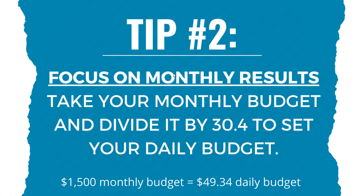Tip number two is to focus on your monthly results. You really want to set a monthly budget ahead of time and then divide that monthly budget by 30.4 to set your daily budget. So if you had a $1,500 monthly budget, your daily budget should be $49.34.